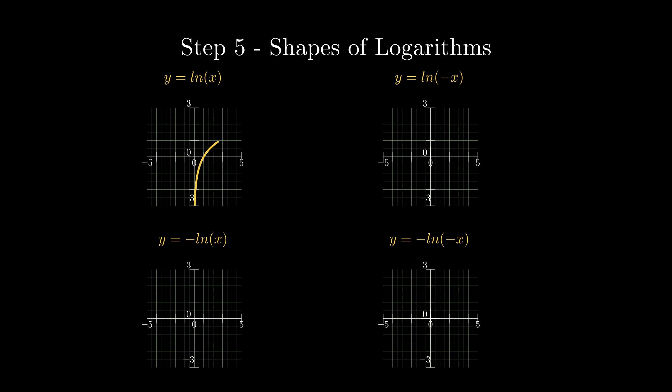Back to shapes of logarithms. We've got four cases for the shapes. The first one: A is positive, B is positive. The second one: A is positive, B is negative. The third one: A is negative, B is positive. And the fourth one: both A and B are negative. So overall, there are four different cases for the shape of a logarithm.